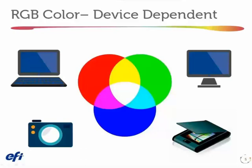All your capture devices — cameras and scanners — and all your monitors work in RGB. The first question that comes back about printing color is: why can't I just print with RGB colors? And the answer is that RGB colors are, by their definition, opaque.